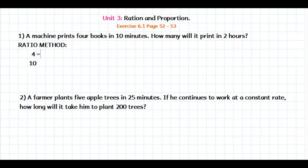This equals x, which is the number of books that I want to know, the number of books that are going to be printed in two hours. As you can see here, we have to use the same units. If I am going to work with minutes, I have to convert this to minutes. So instead of two hours, I am going to use 120 minutes.